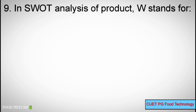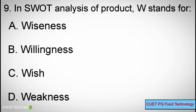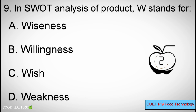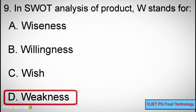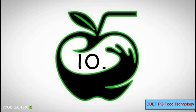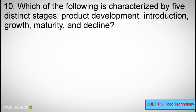Q9: In SWOT analysis, W stands for — A. Wiseness, B. Willingness, C. Wish, D. Weakness. Correct answer: D. Weakness.